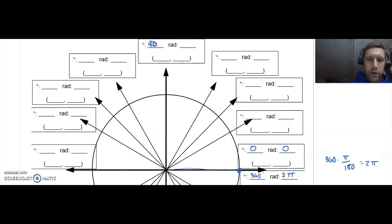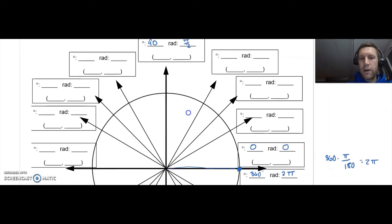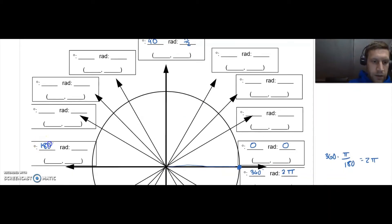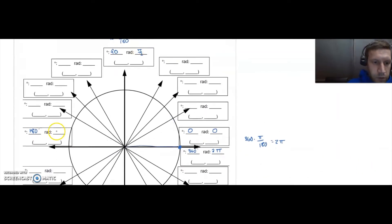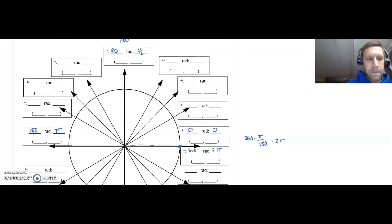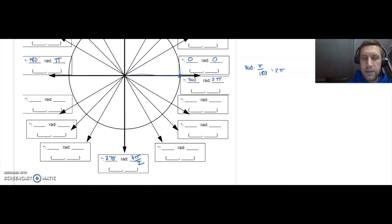Straight up — that's called a quadrant angle, if it lies on the dividing line between two quadrants. That's between quadrant one and quadrant two — that's 90 degrees. In radians: 90 over 180 is one over two, so that's π/2. Every quadrant is 90 degrees, so this down here is 180, which is 2π/2 or π. Add another 90, I get 270 degrees, which is 3π/2. Then add another 90 and you get back to 360 and 2π.